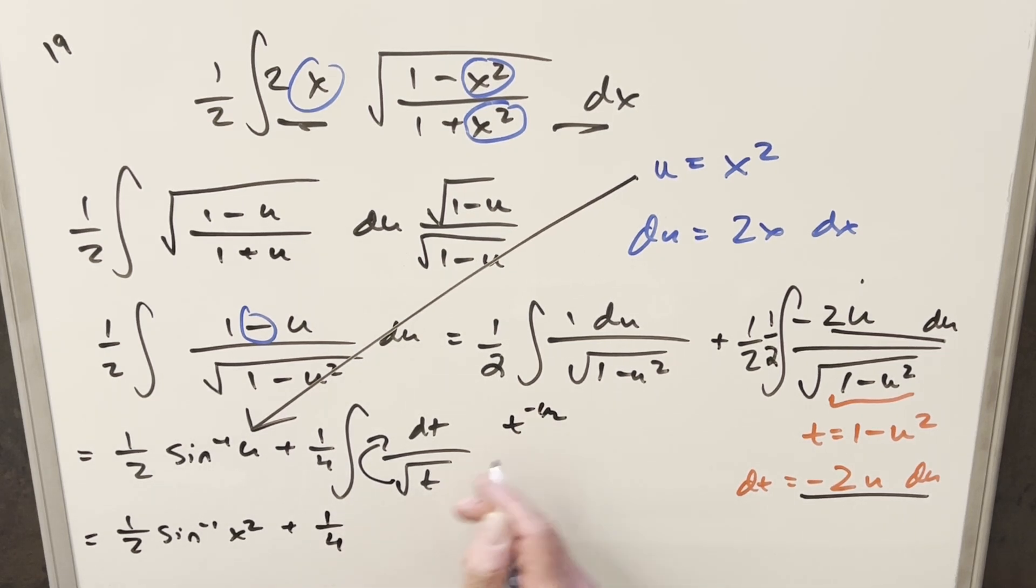So we'll have our 1 fourth in front. Integrate this. Add 1. We get t to the 1 half. And then take the reciprocal, and we need to multiply it by 2 in front. Now, I need to back substitute.